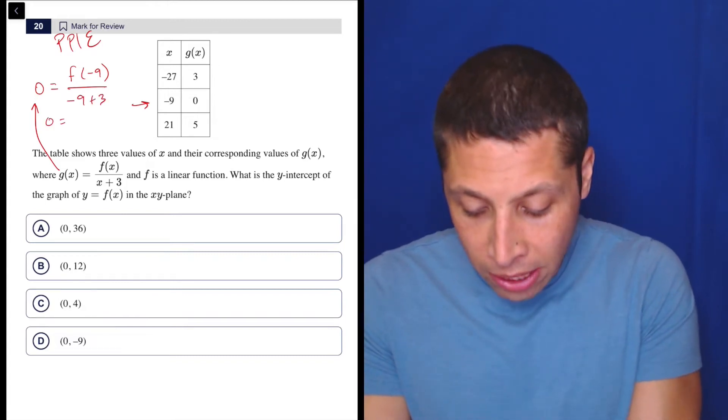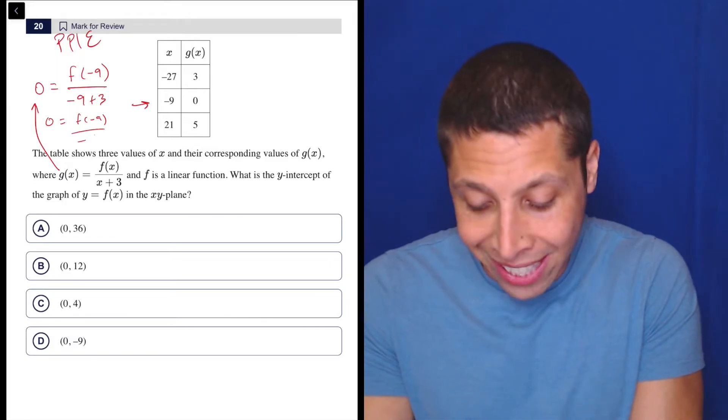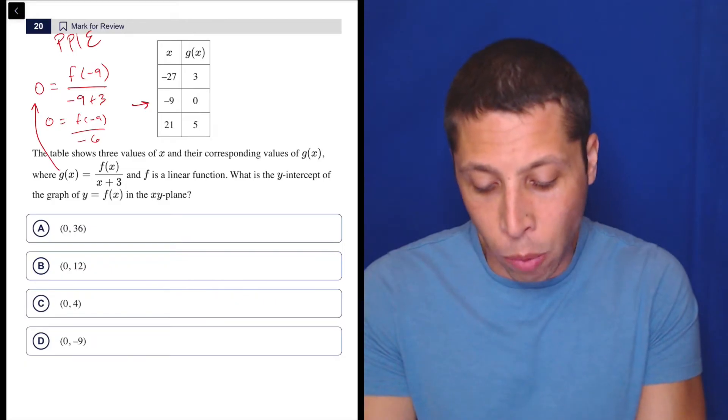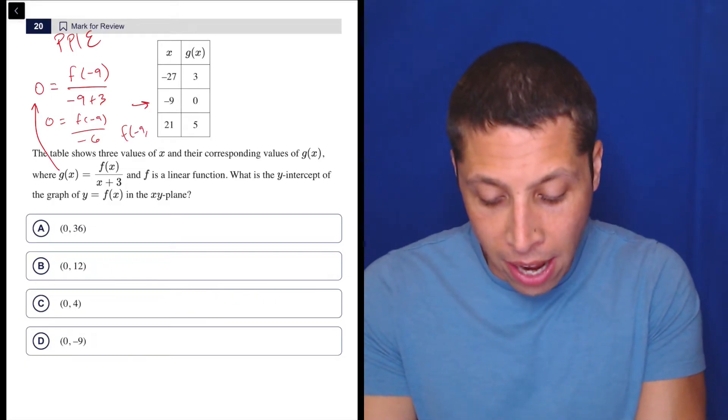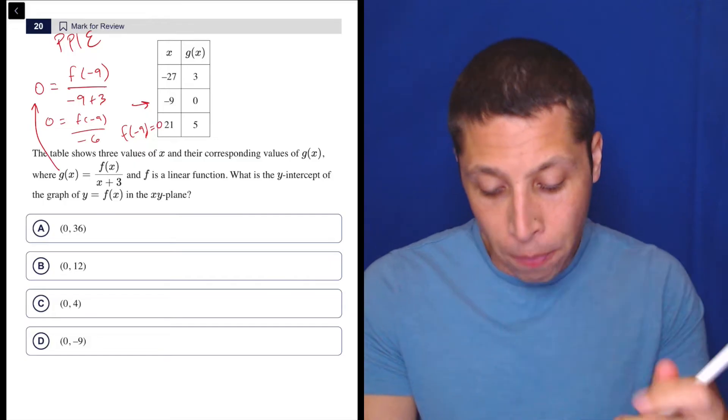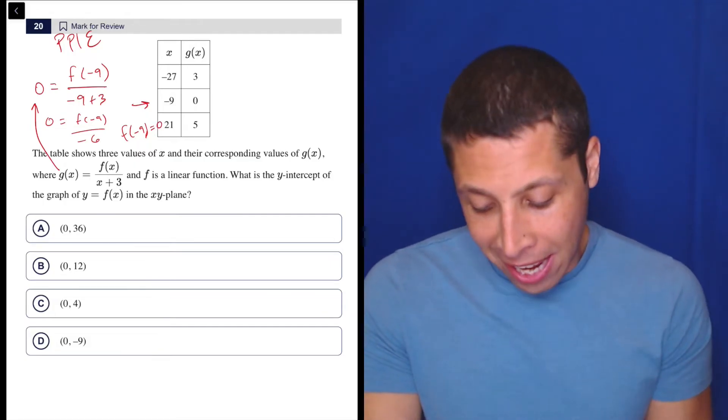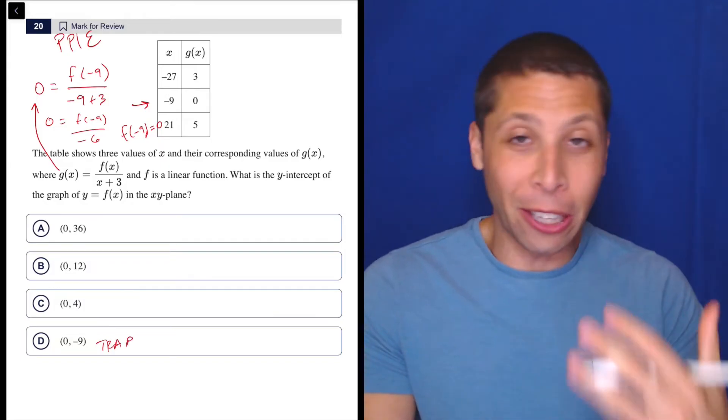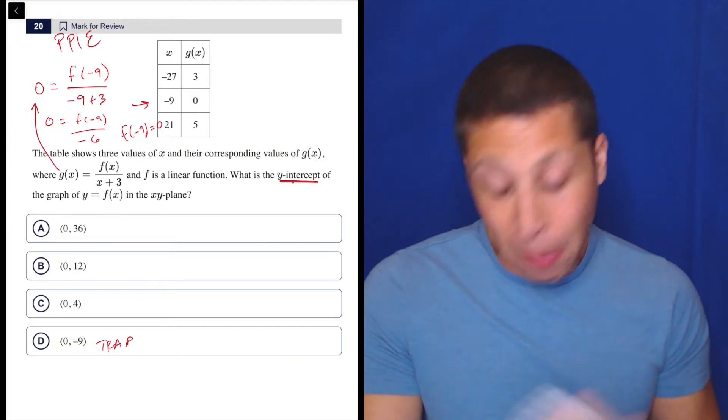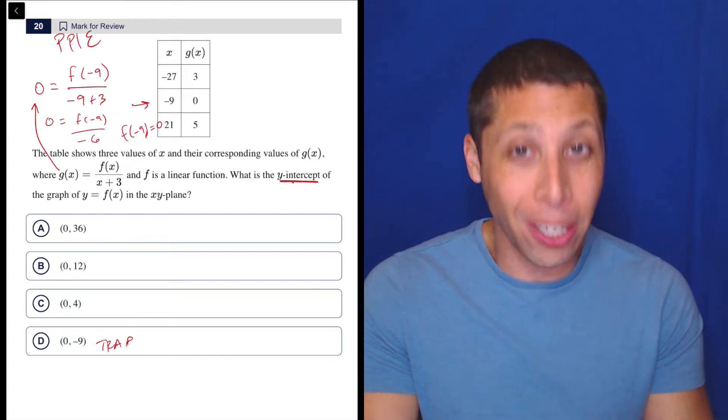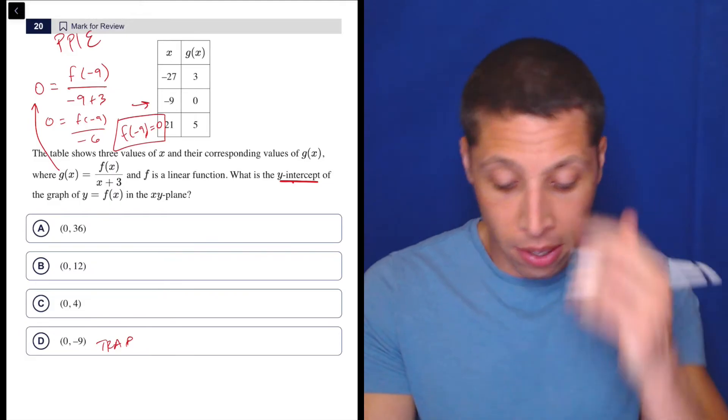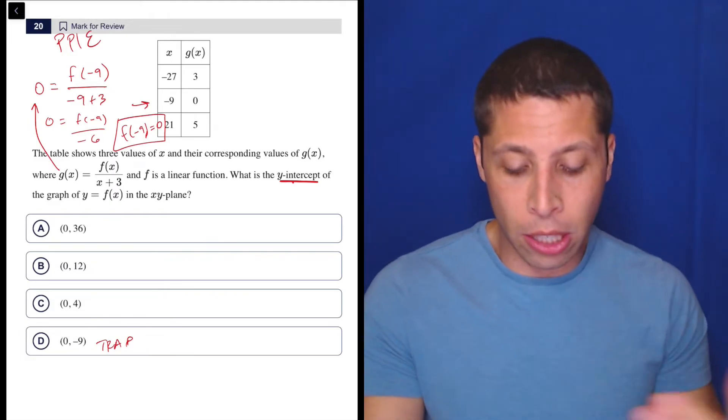So f of negative nine over negative nine plus three. So that zero is equal to f of negative nine over negative nine plus three is negative six. But if I got rid of the negative six, if I just cross-multiplied here, that would just go away. So I would have that f of negative nine is equal to zero. Now, we have to be careful because that is not the same as this. That's a trap. We might really want that to be the answer because it kind of looks like a y-intercept, which is what we want. I mean, technically it is a y-intercept, but what we're working with is technically an x-intercept, where the y-coordinate is equal to zero. We have an x. So right now, I don't know what to do with this.